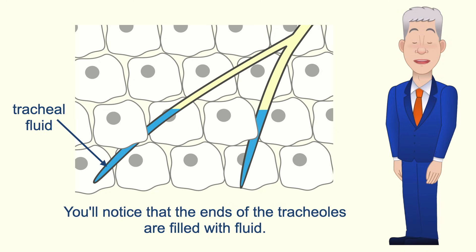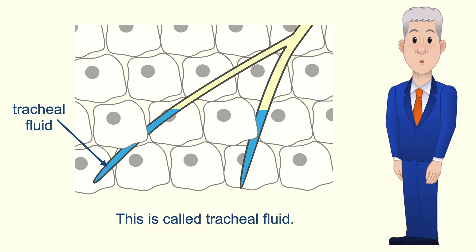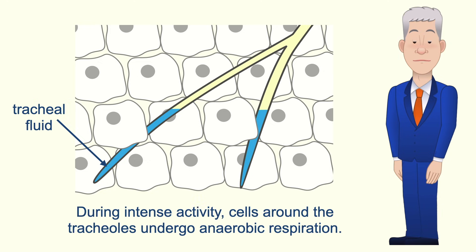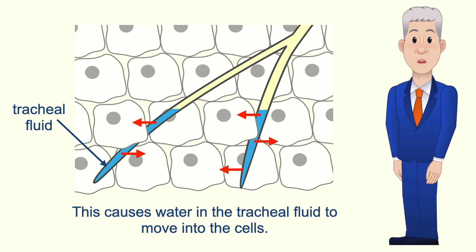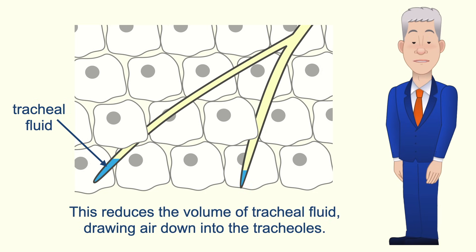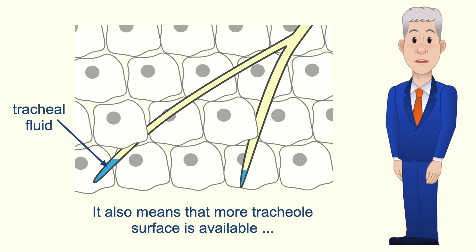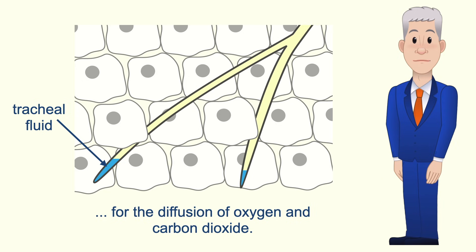The ends of the tracheoles are filled with fluid called tracheal fluid. During intense activity, cells around the tracheoles undergo anaerobic respiration, which produces lactic acid. This lowers the water potential of the cells, causing water in the tracheal fluid to move into the cells. This reduces the volume of tracheal fluid, drawing air down into the tracheoles, and means that more tracheole surface is available for the diffusion of oxygen and carbon dioxide.